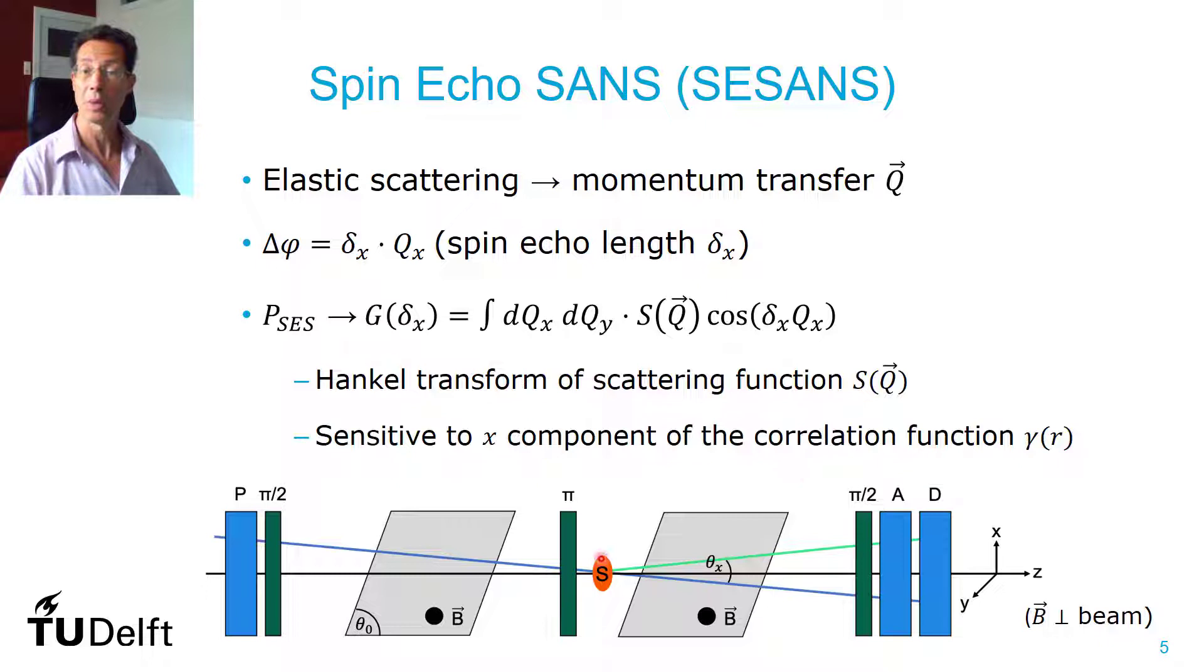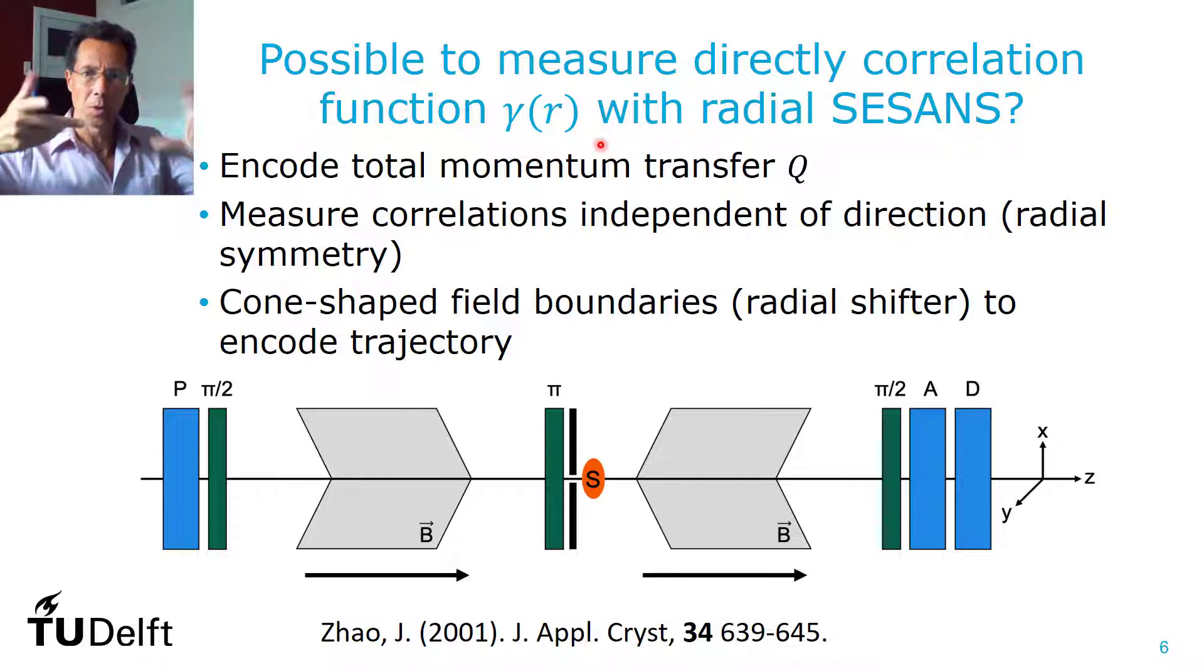So we were wondering if it's possible to make a more radial symmetric setup, where you measure directly the total momentum transfer Q. And then you will need complete radial symmetry. Zou already proposed to use cone-shaped field boundaries to encode the trajectory of the neutron. And after that publication, people didn't pay much attention to it, because it's very difficult to realize something like this.